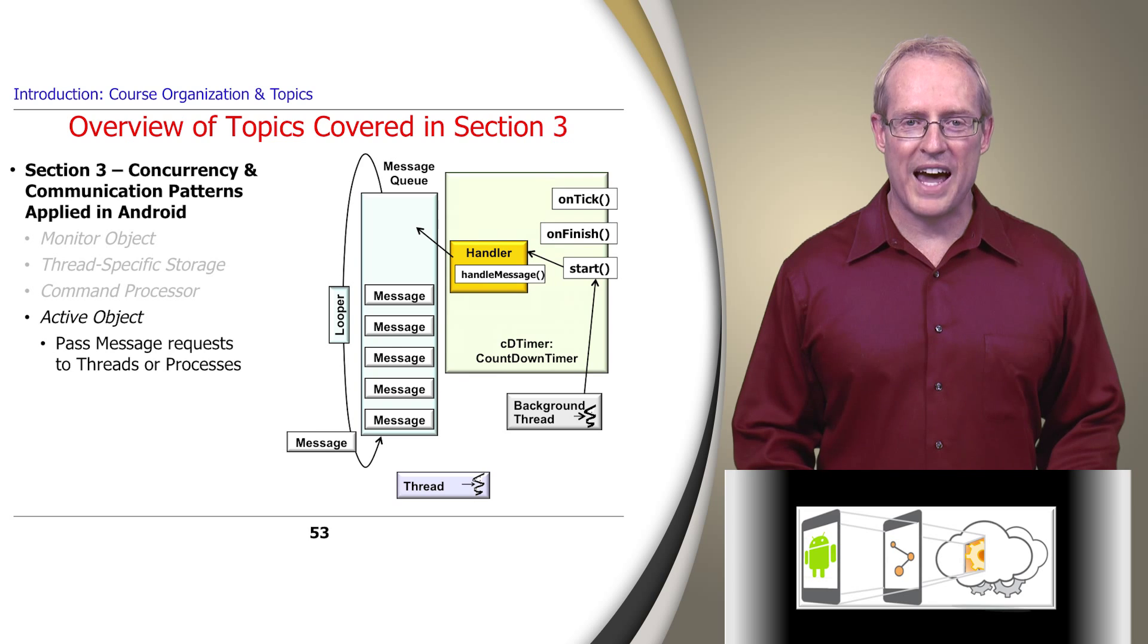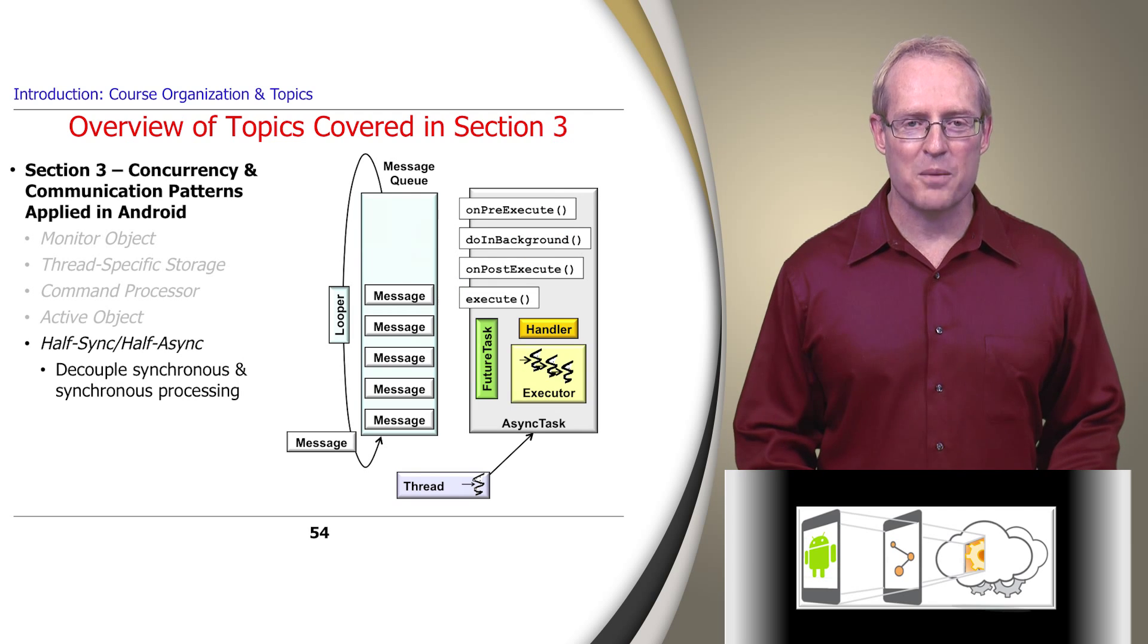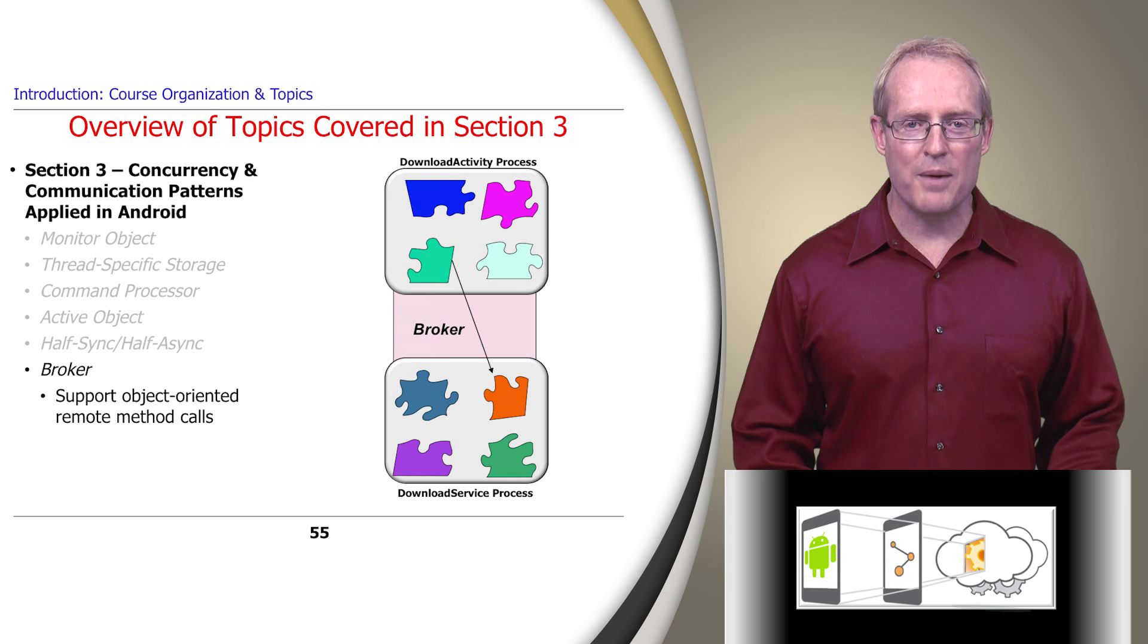It applies a variant of the active object pattern to enable a client in one thread to send messages to a handler running in another thread. It applies the half-sync, half-async pattern to allow one or more background threads to block synchronously while processing long-duration operations, and then passes the results via a synchronized queue to the user interface thread, which only performs short-duration, non-blocking operations. Finally, it applies the broker pattern to support object-oriented remote method calls between activities and services running in different processes.